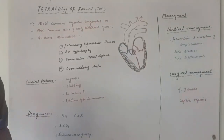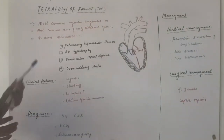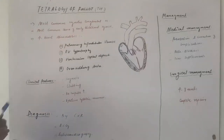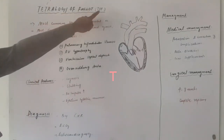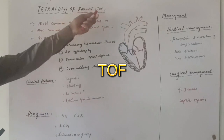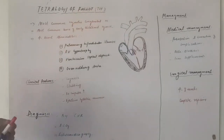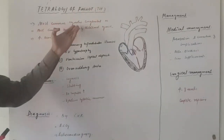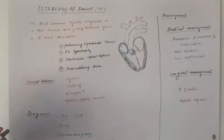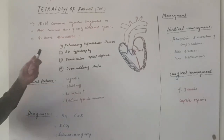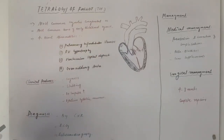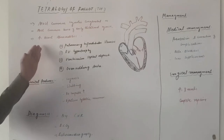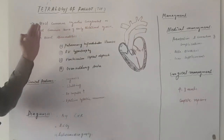Assalamualaikum everyone. In this video I am going to talk about Tetralogy of Fallot, abbreviated as TOF. Tetralogy of Fallot is the most common cyanotic congenital heart disease, and it is the most common cause of early childhood cyanosis.